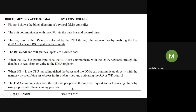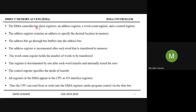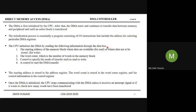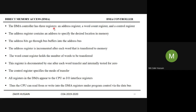DMA communicates with external peripheral through the request and acknowledge lines by using a prescribed handshaking procedure. The DMA controller has three registers: address register, word count register, and control register. We have seen these already. These three registers are part of the DMA controller.